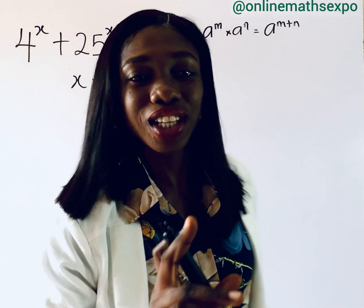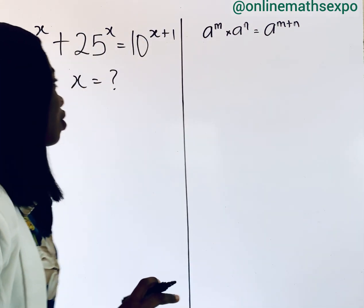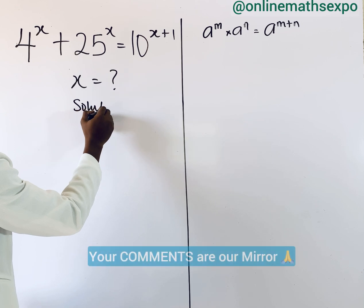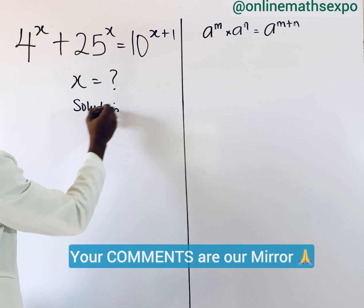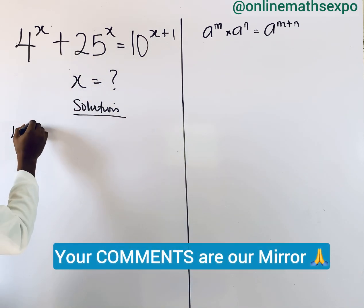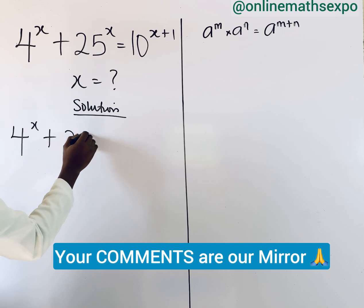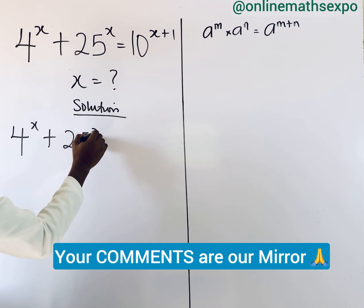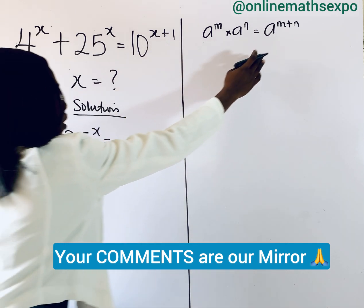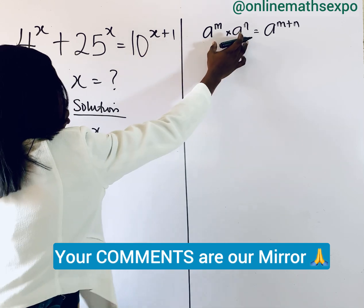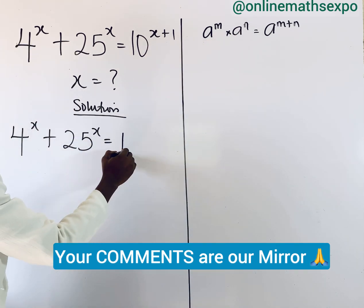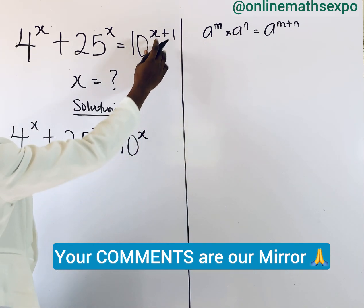Now let's see how useful this can be. We begin with the solution. We bring this down: we are going to have 4 to the power of x plus 25 to the power of x is equal to — for this, we can apply this rule. Let's make this to be like this, so it's going to give us 10 to the power of x.